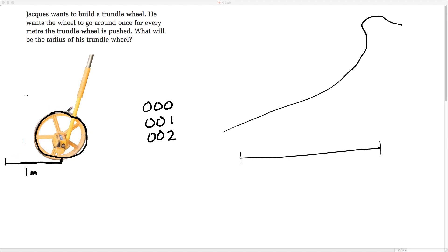The circumference is what we're dealing with here. He wants the wheel to go around once for every meter the trundle wheel is pushed, so that translates to the circumference one meter along the ground will represent one meter of the circumference.